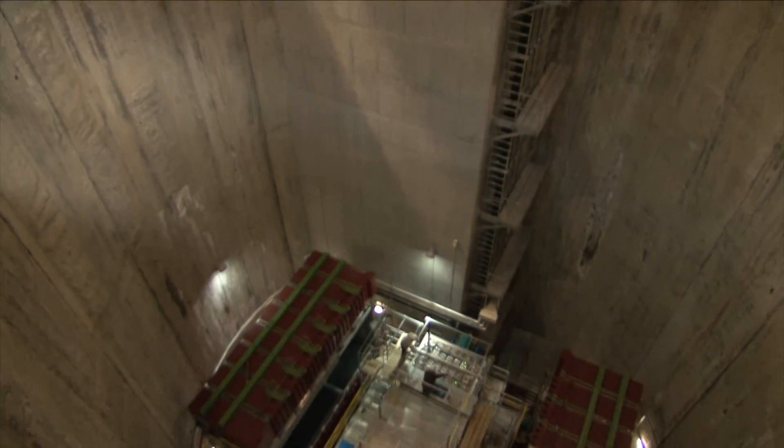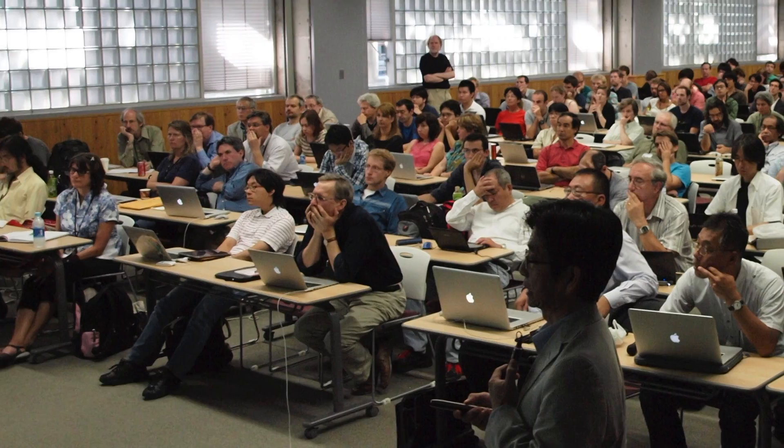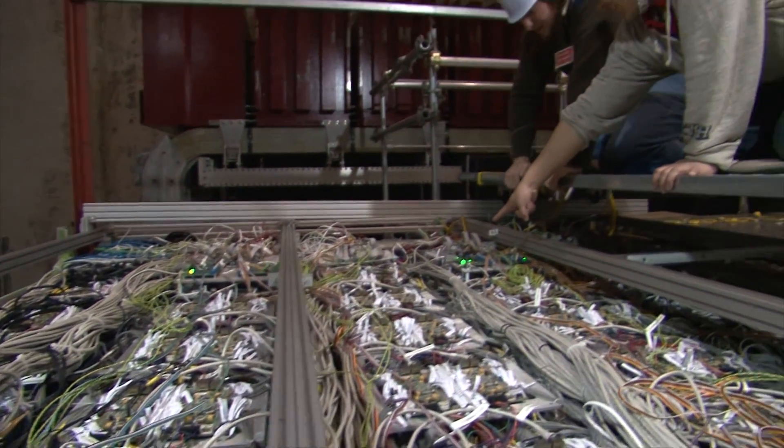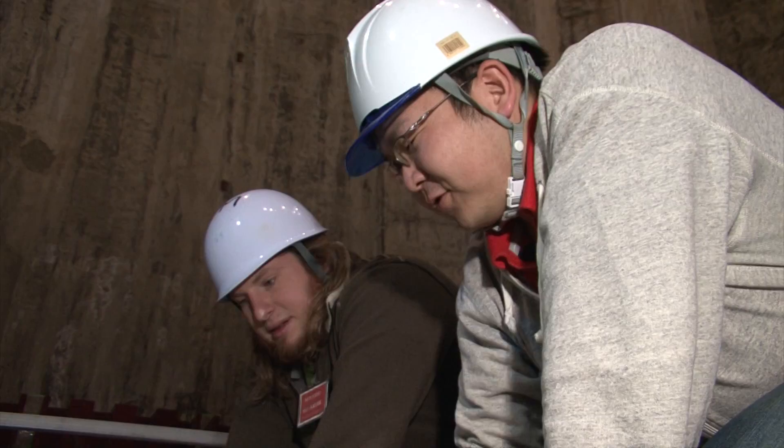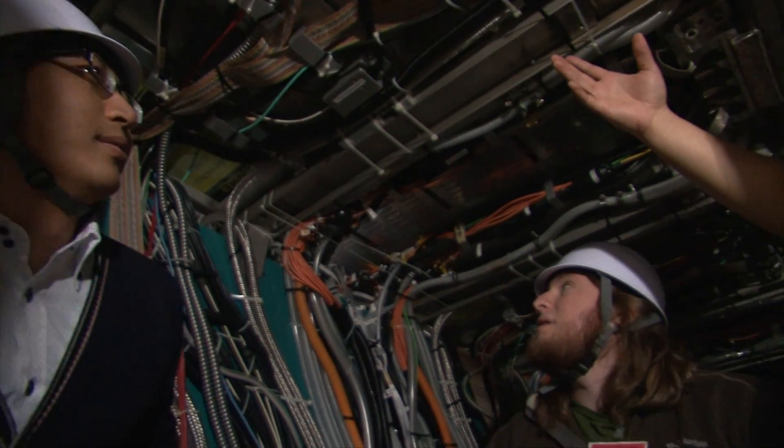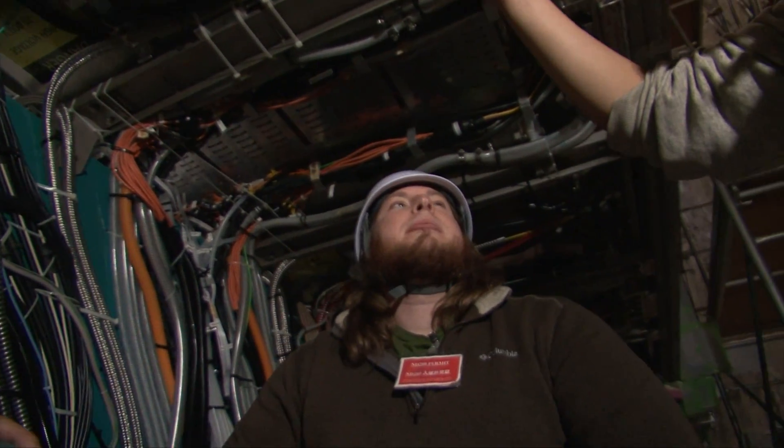The T2K experiment has been running since 2009. At present, around 500 physicists from 12 different countries participate in the project. The T2K experiment has discovered an entirely new property of neutrinos.